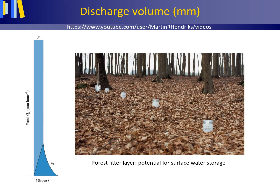Multiplying this result by 1000 millimeter per meter delivers an answer in millimeter. One should divide by the total drainage area, irrespective of whether all or only part of the drainage basin actually contributes to the discharge. This is because the same total drainage basin area is involved when translating precipitation or evaporation from volume units to length units or vice versa.